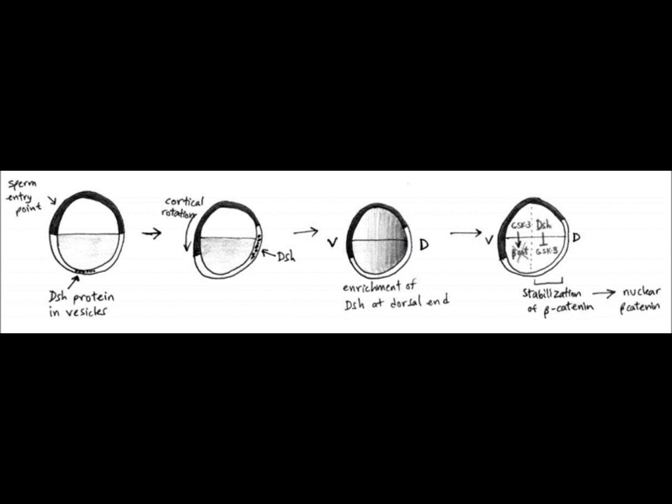What does cortical rotation actually have to do with specifying dorsal structures through the Wnt pathway? Looking at the first picture on the left, disheveled protein is actually contained in vesicles located at the vegetal pole. It's important to note that this disheveled protein is not zygotic in nature. It's actually deposited there by the mother.